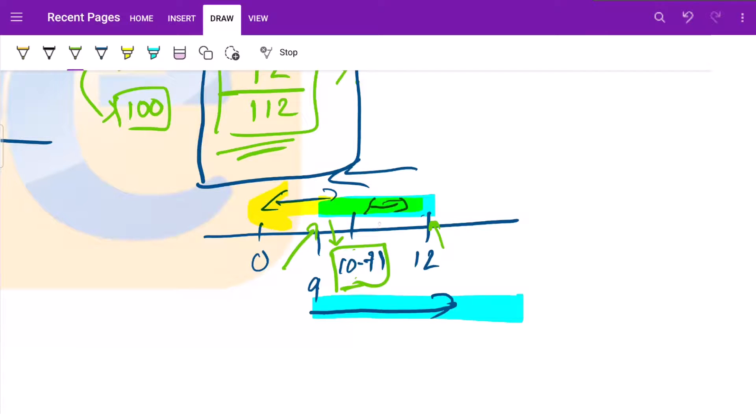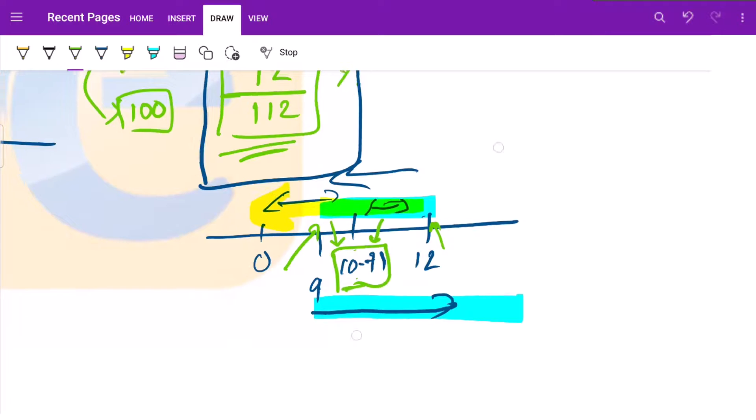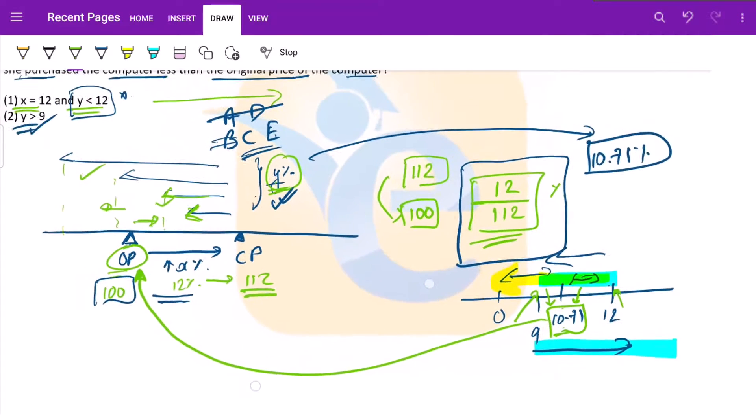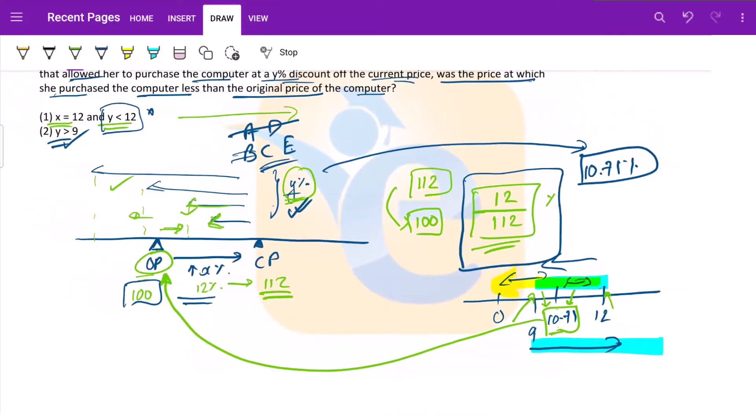But again, 10.71 lies between this. So at some values, it will give a value less than 100, at some it will give a value greater than 100. Because at exact 10.71, we were reaching back here. So if there is something greater than 10.71, we would be on either of the side. We do not actually need the exact numbers here. Just that idea that we'd be on either of the side. So this eliminates C also and E is what our answer is.